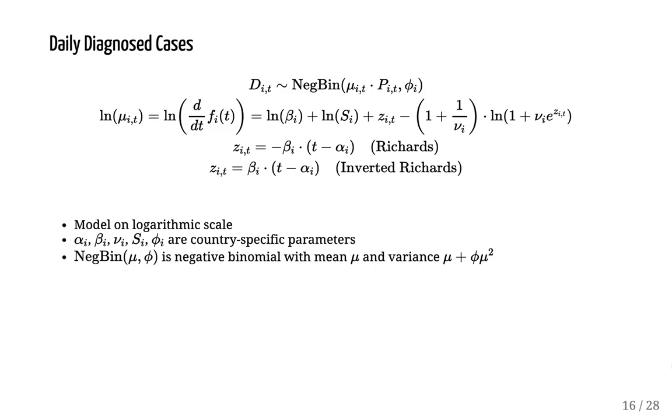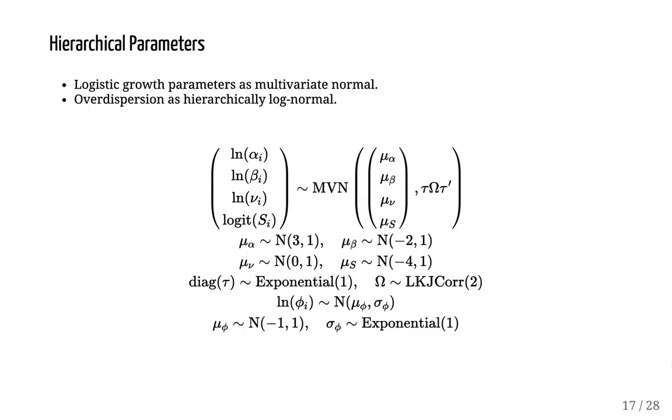We parametrize the negative binomial distribution using the mean and overdispersion phi. Of course, STAN parametrizes using the inverse of the overdispersion, but that is easily fixed by using transformed parameters. But now we have all of these country-specific parameters: alpha_i, beta_i, nu_i, s_i and phi_i, and we need to put some distributions on those. To start with, when we were all learning about STAN and learning more about growth models at the start of the epidemic, each of the parameters alpha, beta, nu and s were just given separate normal distributions or beta distributions or whatever seemed reasonable, and we did not model any sort of covariance between them.